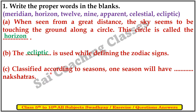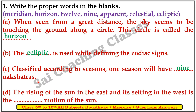C. Classify according to seasons — one season will have 9 nakshatras. D. The rising of the sun in the east and its setting in the west is the apparent motion of the sun.